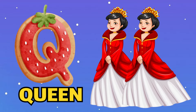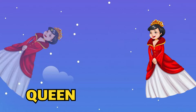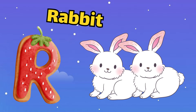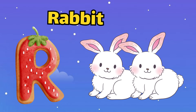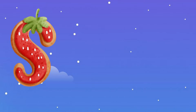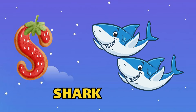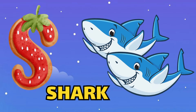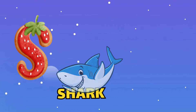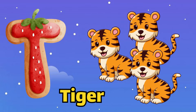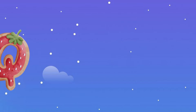Q is for queen, c-c-queen. R is for rabbit, r-r-rabbit. S is for shark, s-s-shark. T is for tiger, t-t-t-tiger.